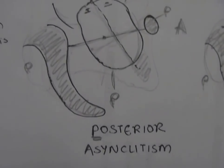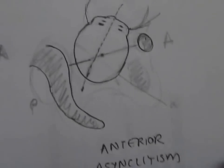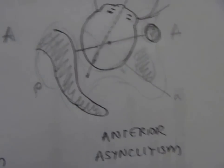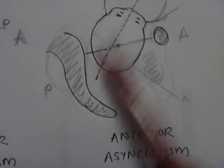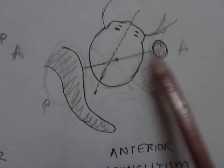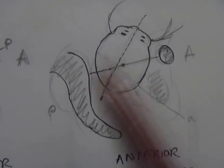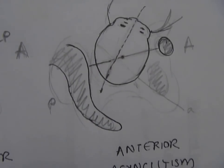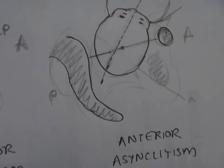In anterior asynclitism, the anterior parietal bone presents and the sagittal suture is closer, or you know approaching the sacrum. It is not midway between the pubis and the sacrum again, it is approaching the sacrum more than the pubis.